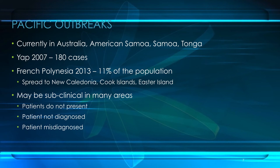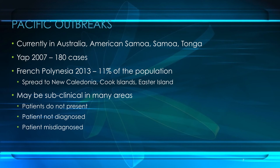Zika resurfaced in French Polynesia in October 2013, affecting about 11% of the total population, and that outbreak spread to other Pacific islands including New Caledonia, the Cook Islands, and Easter Island. As most cases present with mild illness similar to other circulating viruses, and because there was limited laboratory capacity during those outbreaks, it's likely that many more cases went unidentified in both the Yap and French Polynesia outbreaks. As of the 7th of February 2016, we have seen cases in Australia, American Samoa, Samoa, and Tonga. Many cases in any potential future Pacific outbreak may be subclinical, undiagnosed, or misdiagnosed.